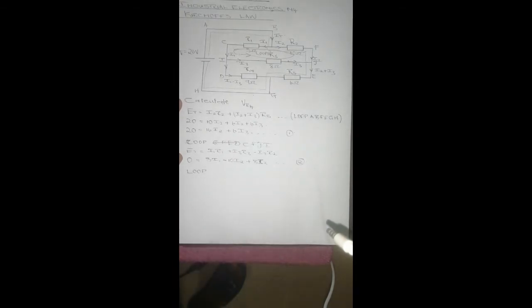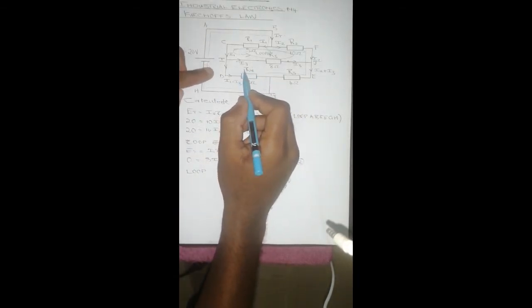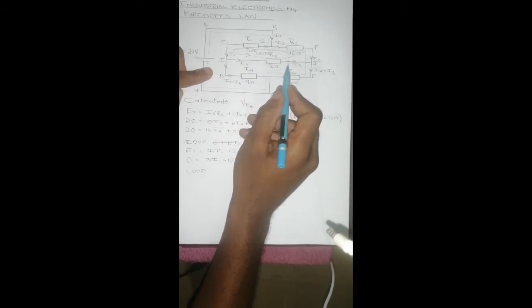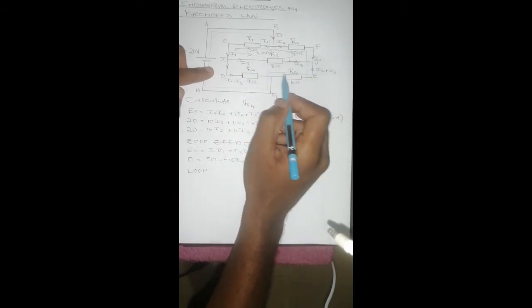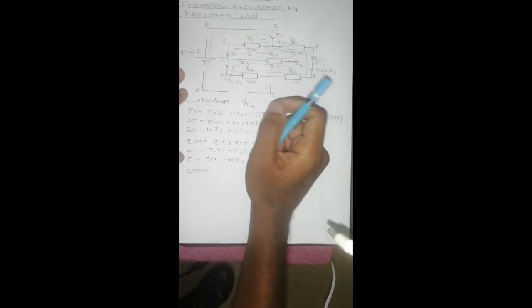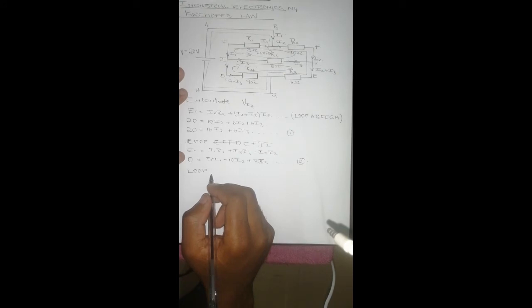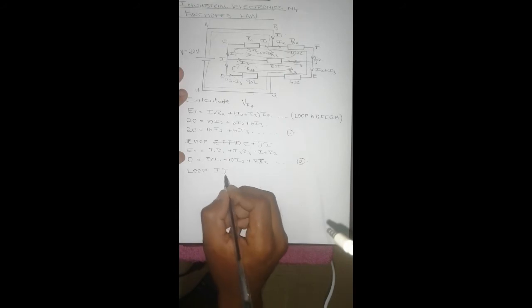The third loop is going to be this loop. So we've got I3 going in that direction and going in that direction. So we're going to take this loop in this direction because this will be positive and this will be positive; only one will be negative. So we're going to take this loop: I, G, E, D.